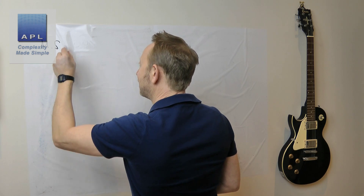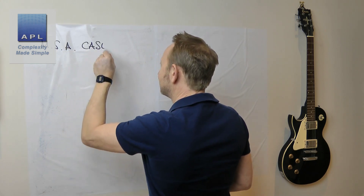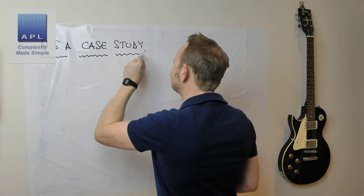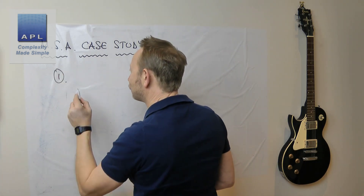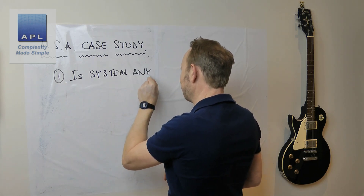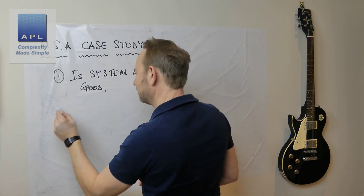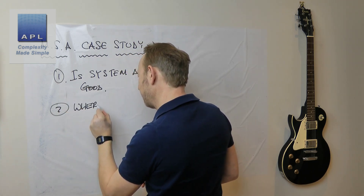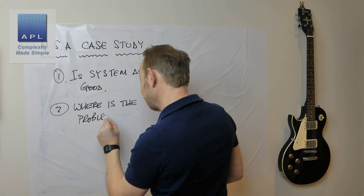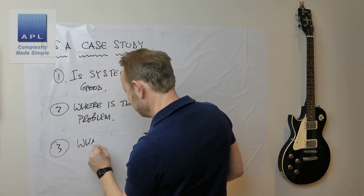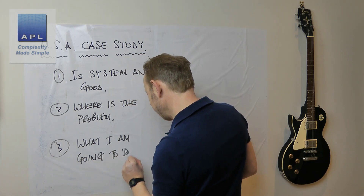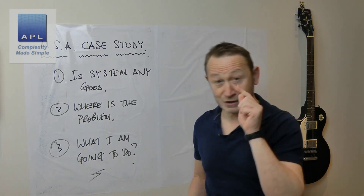So we're going to take a look at an MSA case study. Just a little reminder - three questions your MSA is trying to answer: one, is my system any good? Two, where is the problem? Three, what am I going to do about it? Those are the three questions we need to answer.